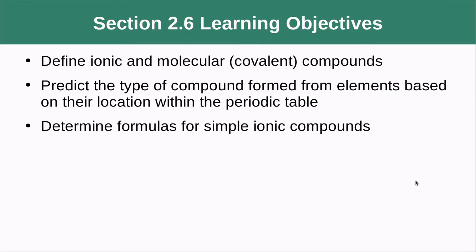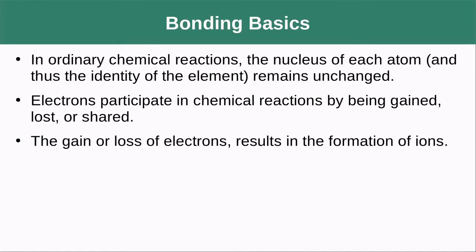In section 2.6, we're going to define ionic and molecular covalent compounds, predict the type of compounds formed from elements based on their location in the periodic table, and determine formulas for some simple ionic compounds.